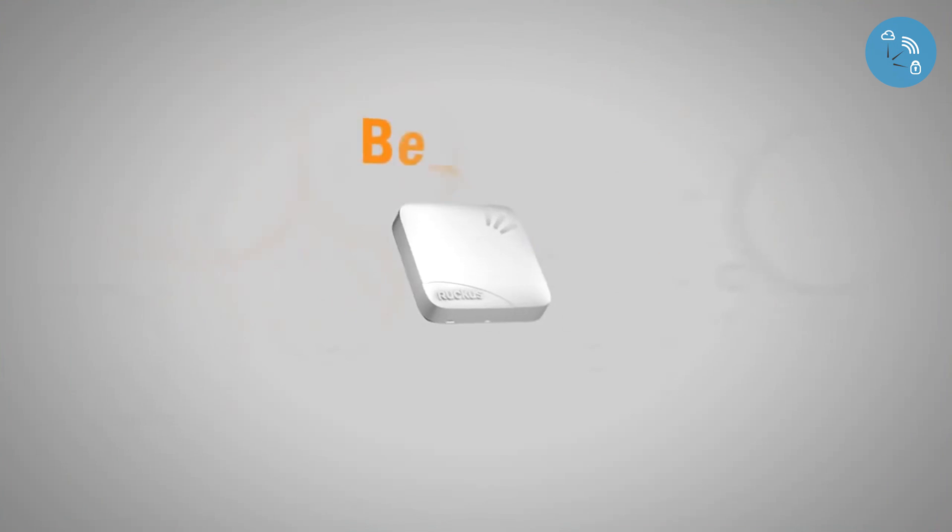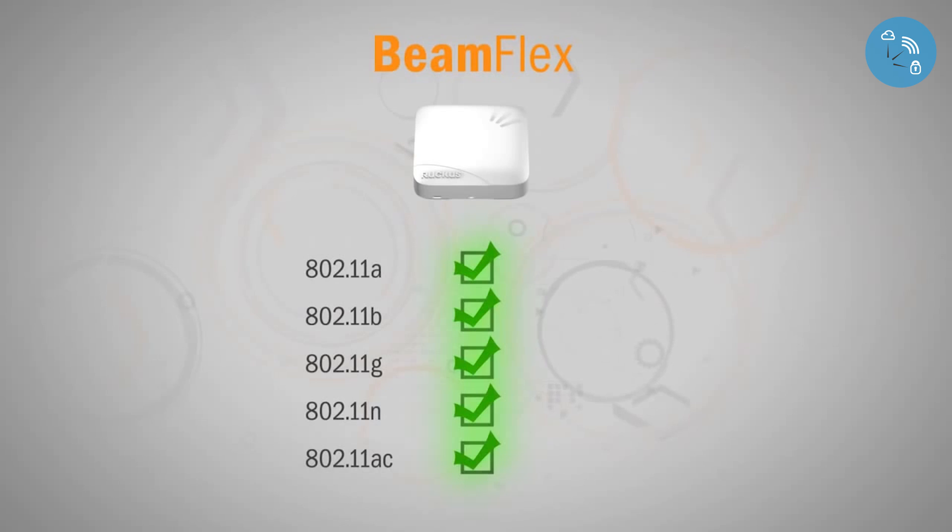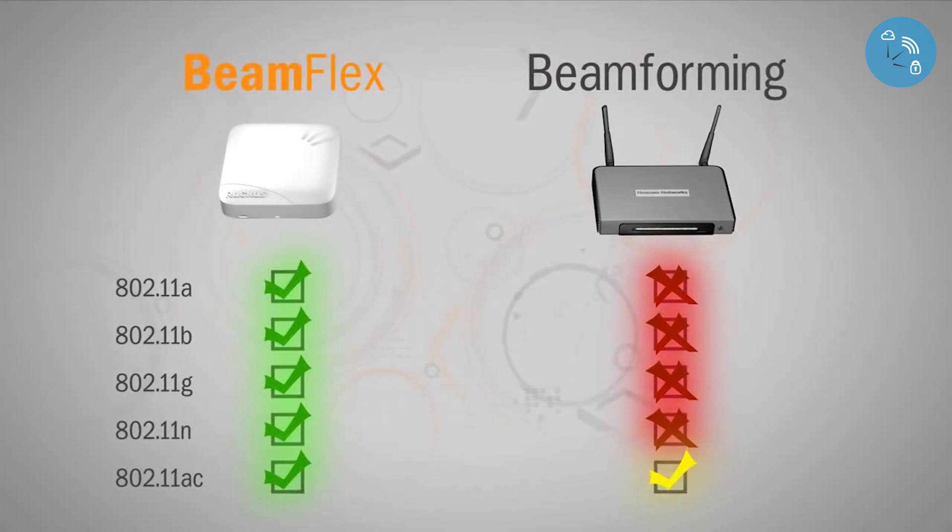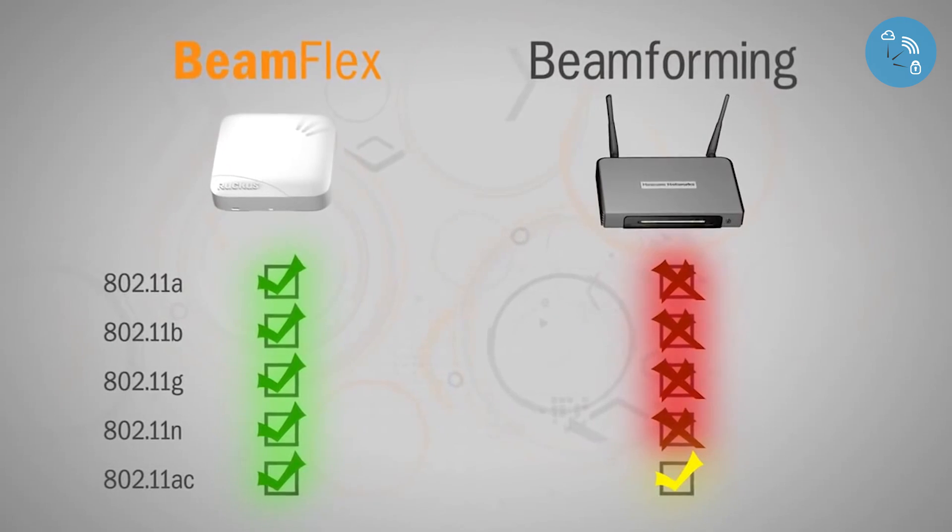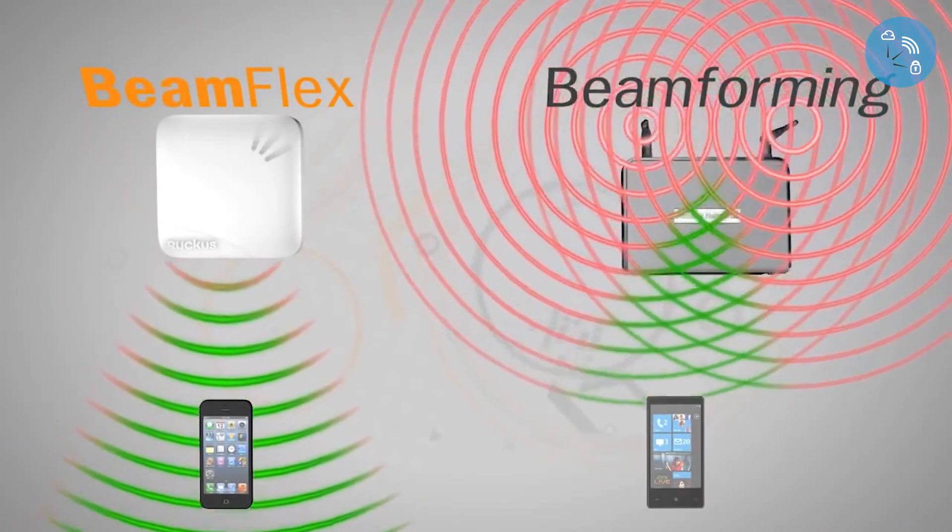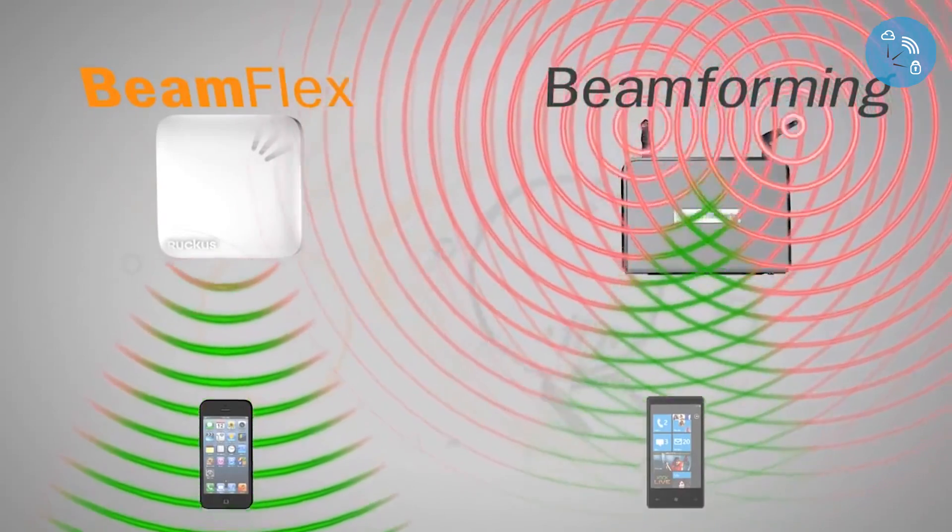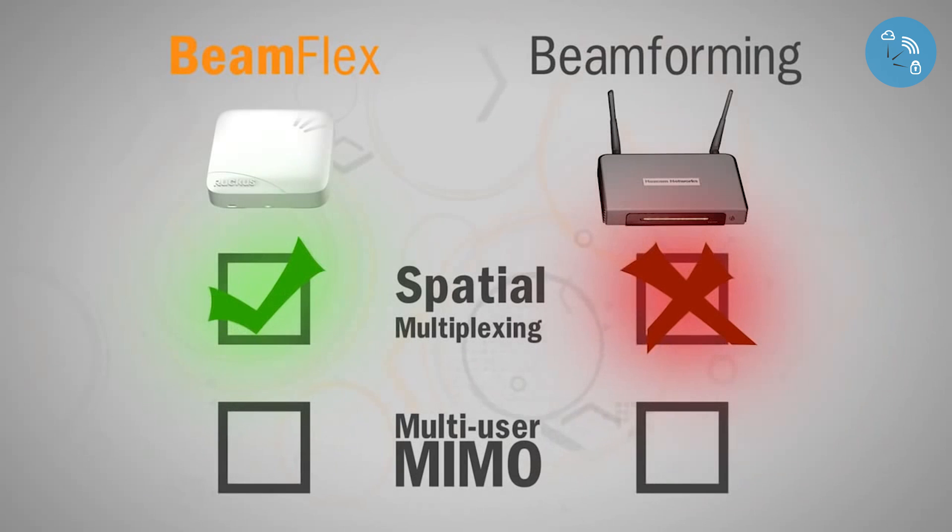One of the greatest benefits of BeamFlex is that it's inherently compatible with all Wi-Fi technologies. On the other hand, transmit beamforming only provides mild gains in very specific situations. It's only supported by a limited subset of clients, and it does very little to reduce Wi-Fi noise. In addition, the ability to use throughput enhancing techniques such as spatial multiplexing and multi-user MIMO are in direct conflict with the use of beamforming.